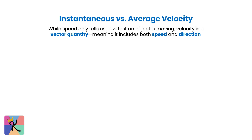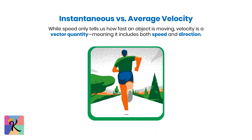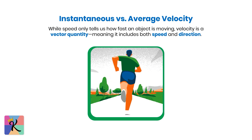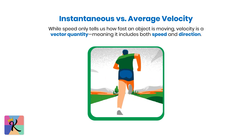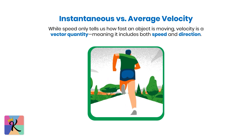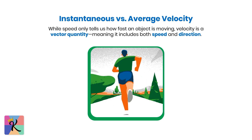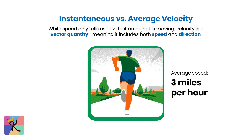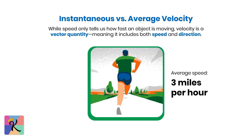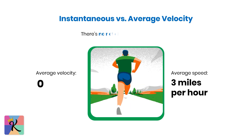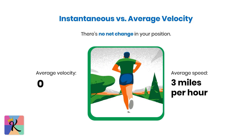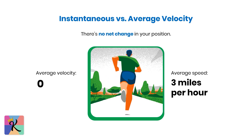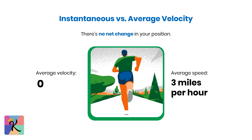Here's where things get interesting. Imagine you run 3 miles in a loop and end up back where you started. Your average speed might be 3 miles per hour, but your average velocity would be zero because there's no net change in your position — you're right back where you began.